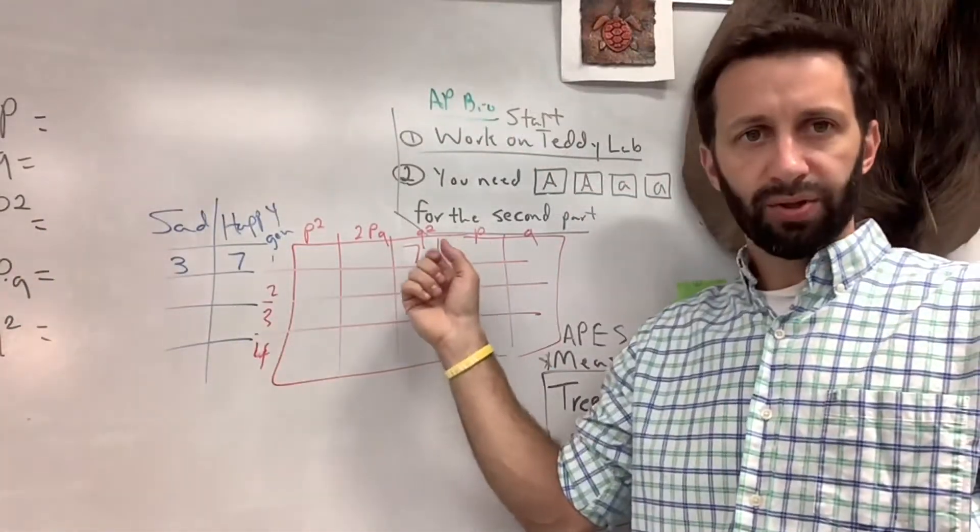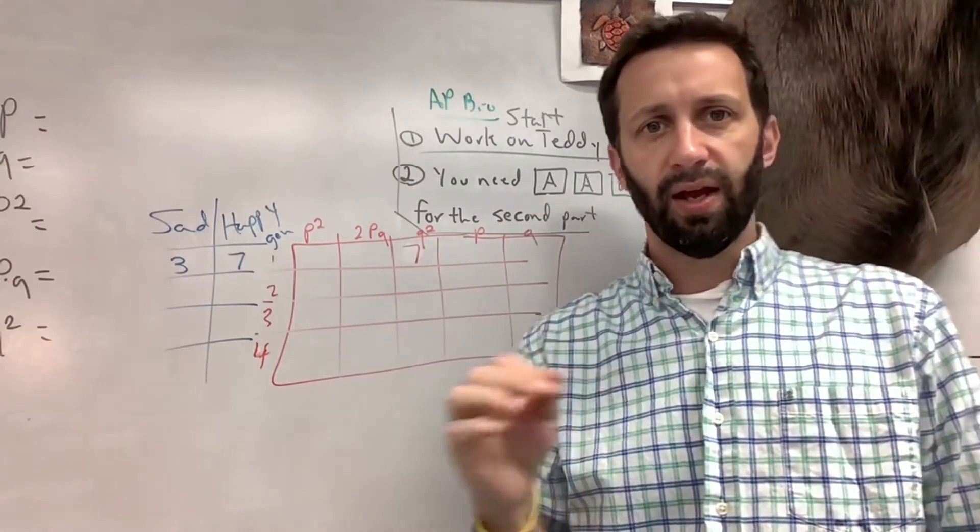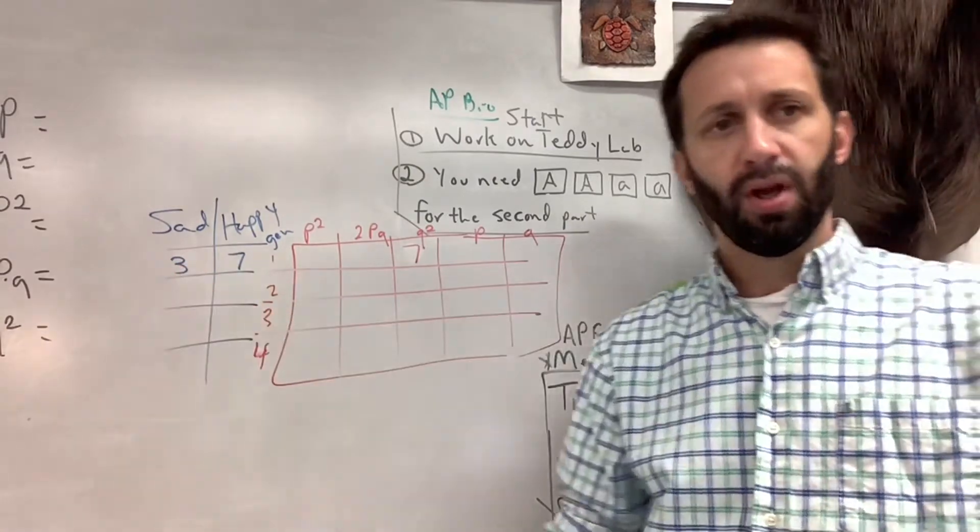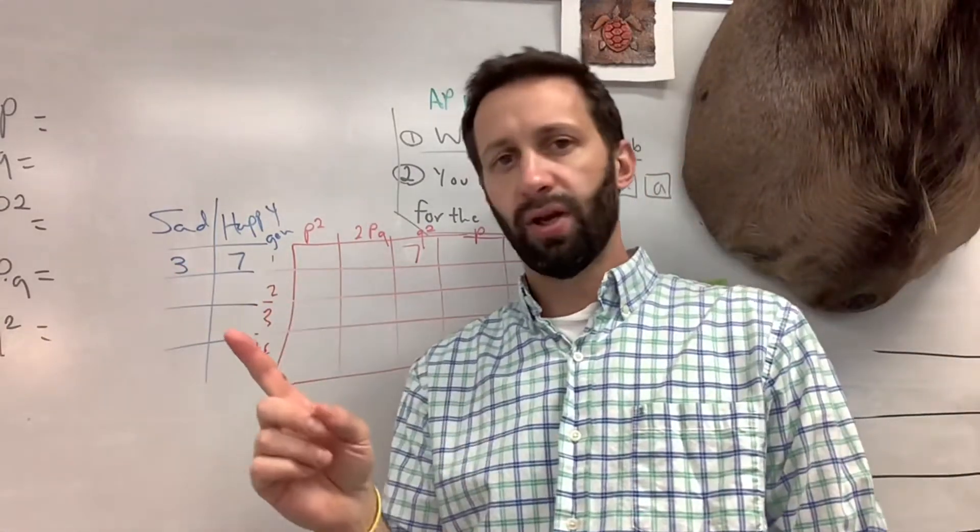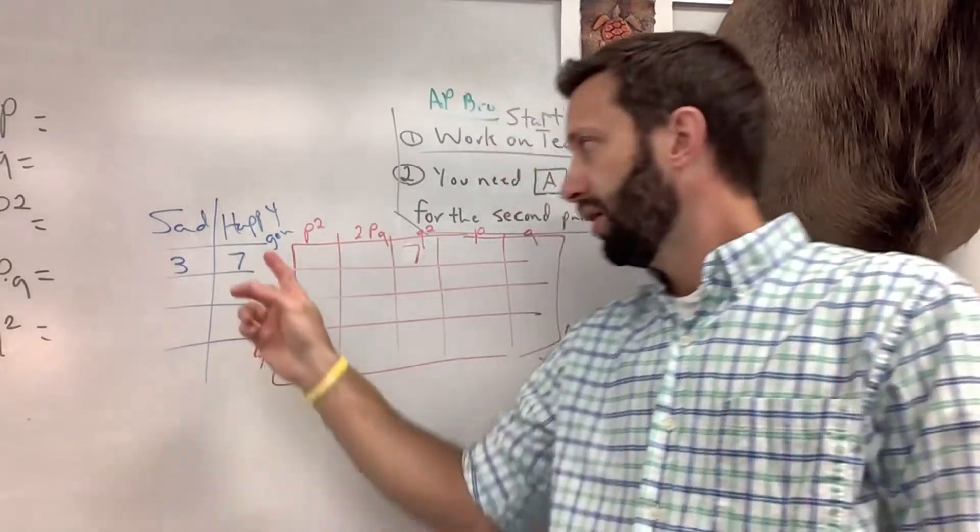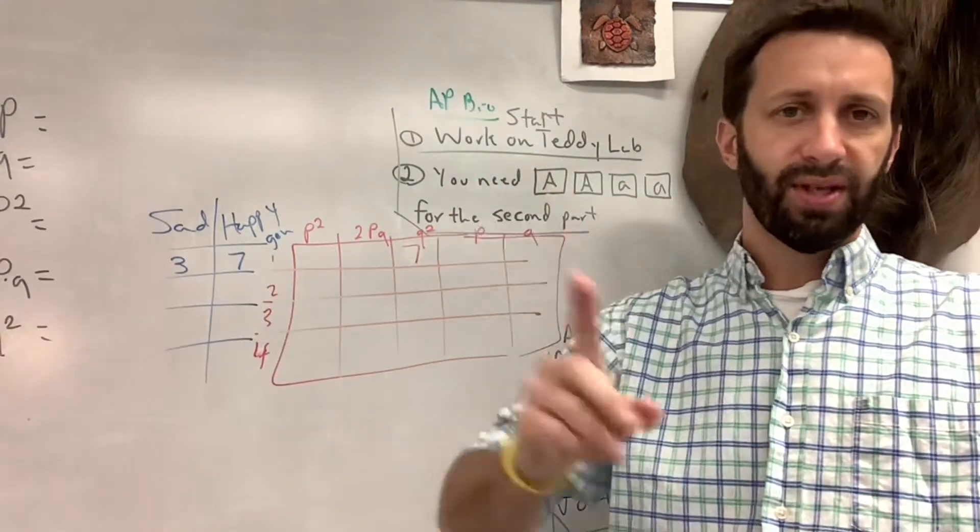So basically I kind of drew it out real quick up here so you can see what we're doing. In the first generation, we're gonna start out with seven happy bears and three sad bears. Sad bears are the dominant trait, so you don't know if they're heterozygous or homozygous for sad. Happy bears is the recessive trait and we know that's homozygous recessive.